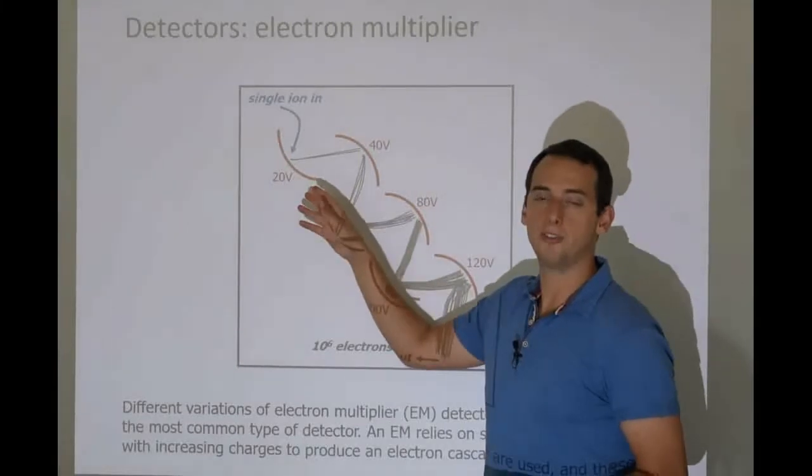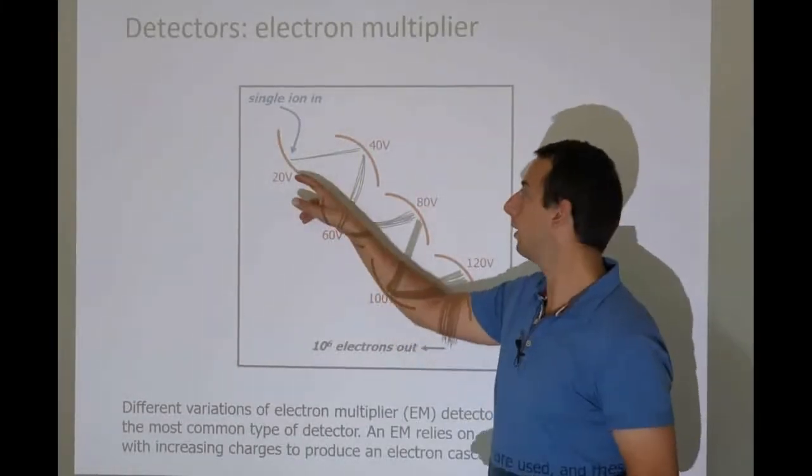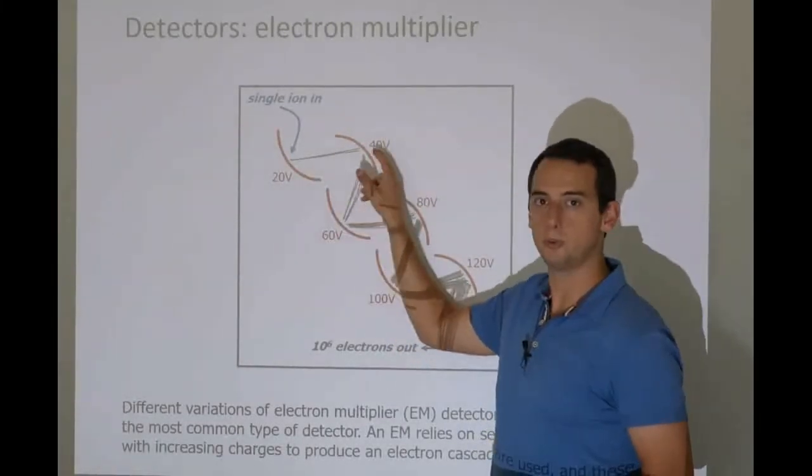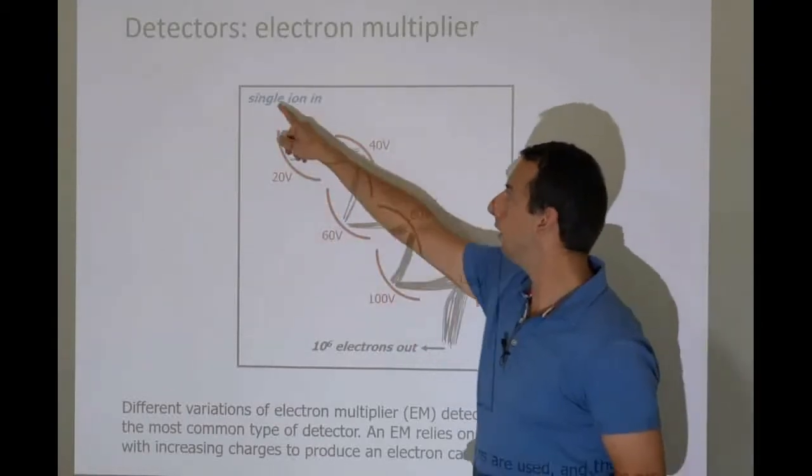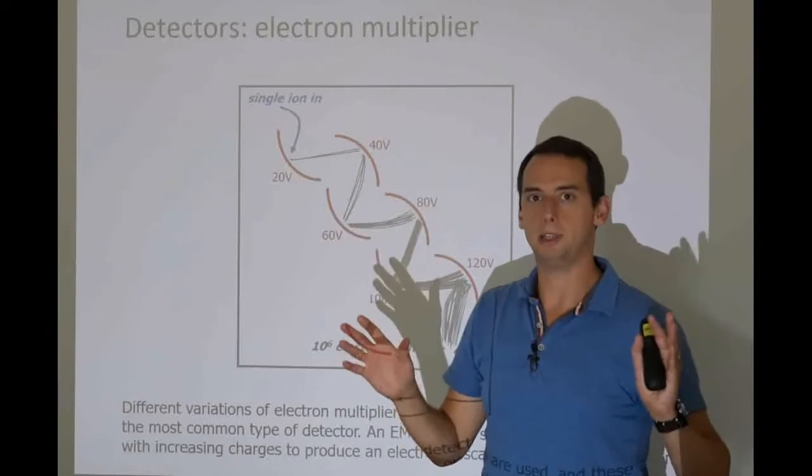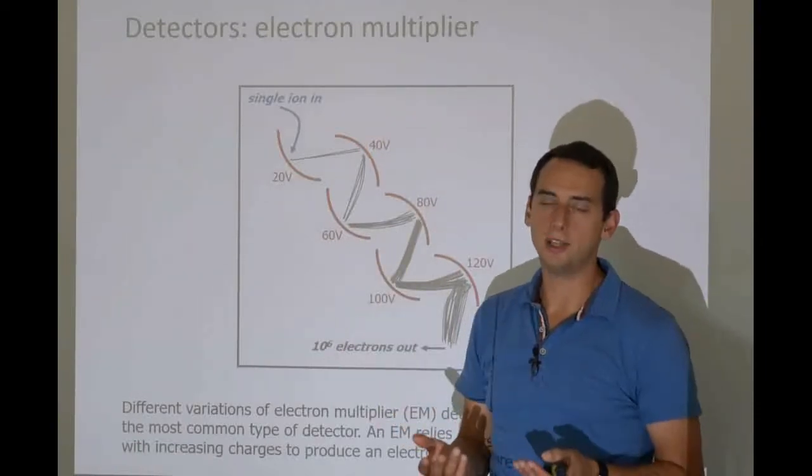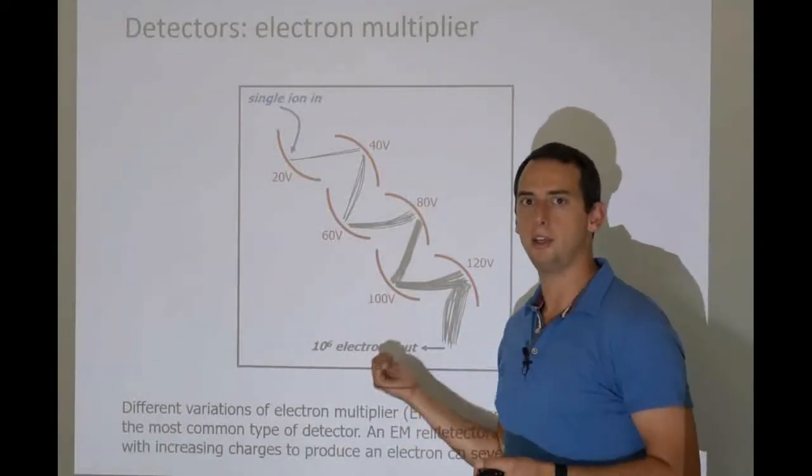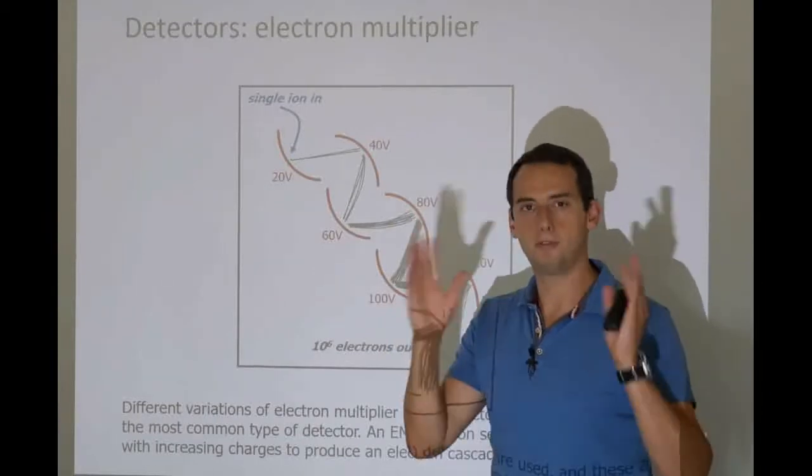Essentially, you use something known as a Faraday cup that are organized in dynodes. I'm being a little bit facetious and I'm assuming a single ion coming in. In real life, a single ion would never be enough to generate a meaningful current at the end. But for the sake of argument,